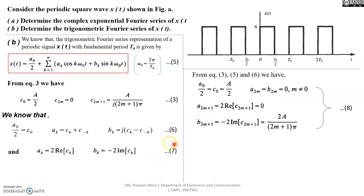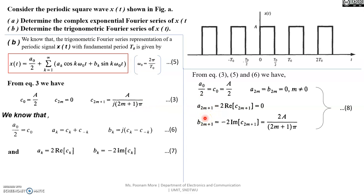For odd terms, using the alternative representation in equation 7: the odd terms of ak equal two times the real part of the odd-indexed ck. Since c(2m+1) equals A by (j(2m+1)pi) contains only an imaginary term with no real part, the odd terms of ak equal 0. Therefore, there are no ak terms present for this signal.